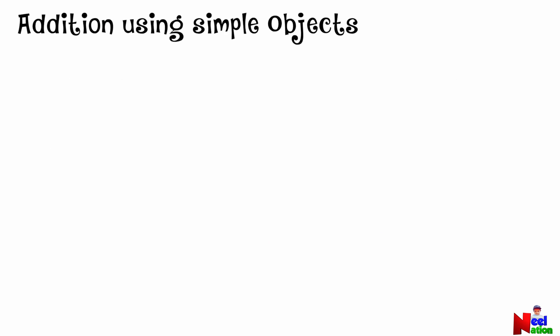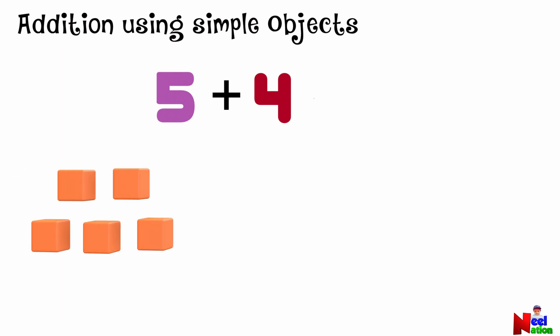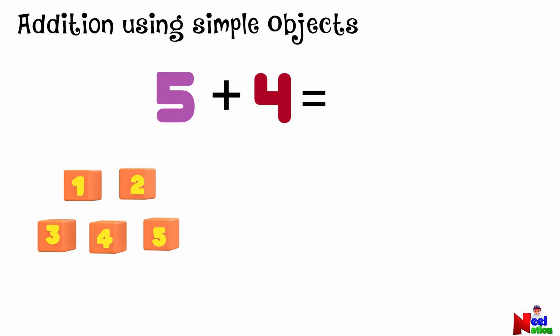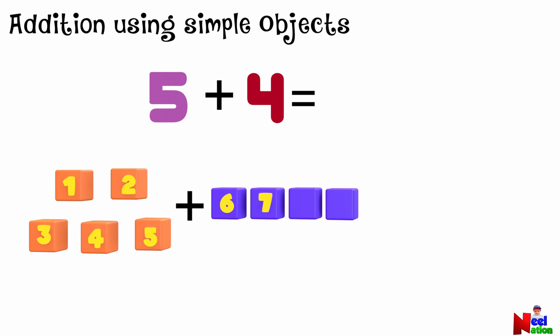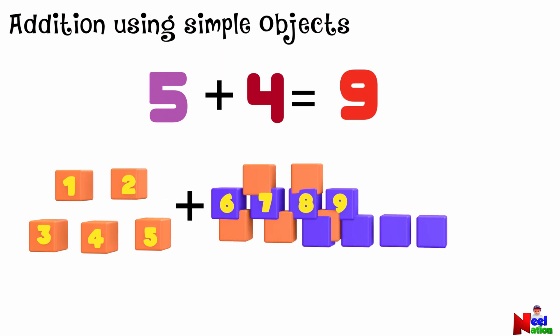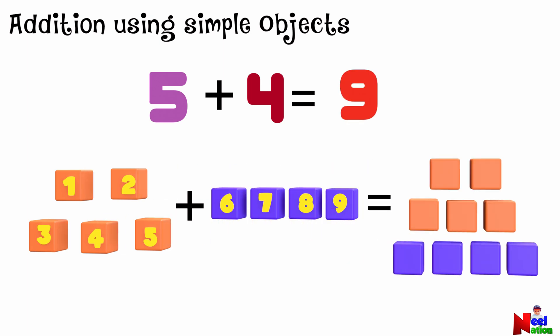Now, let's do addition using simple objects. Can you tell me what is five plus four? Let's do addition using some cubes. We'll start with five cubes. Now let's add four more cubes. To find the total, let's count on starting after five: six, seven, eight, and nine. That means the total, or the sum, of five plus four is nine. Five plus four equals nine.